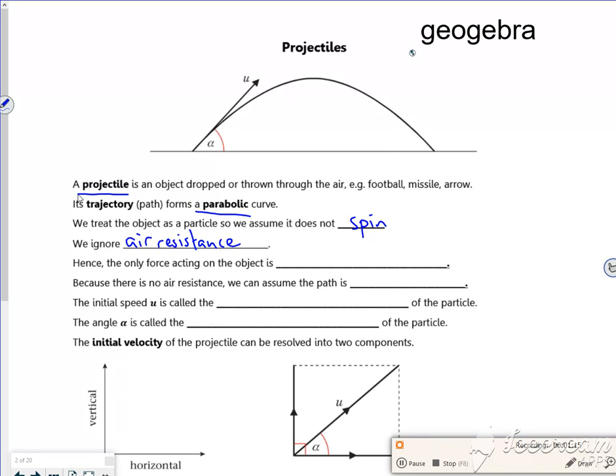So the only force acting on it is its weight. You're looking at gravity pushing down. Because there's no air resistance we assume that it's symmetrical. If there was air resistance it would kind of push it down, it wouldn't be symmetrical. But we have assumptions to make it a little bit easier.